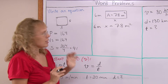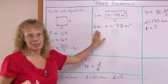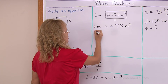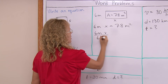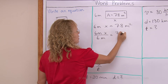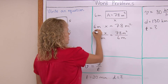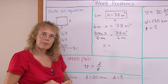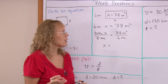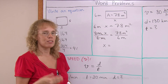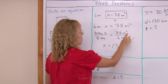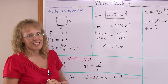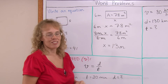To solve it, X is multiplied by something, so we need to divide both sides by 6 meters. 6 meters times X divided by 6 meters equals 78 square meters divided by 6 meters. The 6 meters cancel on the left, leaving X alone. On the right, 78 divided by 6 — 13 times 6 is 78 — so X equals 13. And square meters divided by meters gives us just meters, which makes sense because it's a side length.